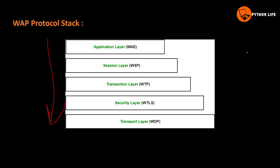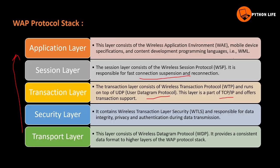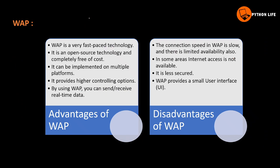The advantages of WAP are that it is a very fast-paced technology and can be implemented on multiple platforms such as mobile devices and computers. It provides higher control options including data transmission control, error control, and time management. Using WAP, you can send and receive real-time data.